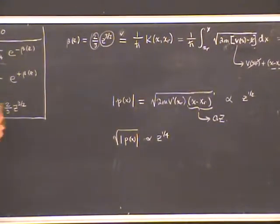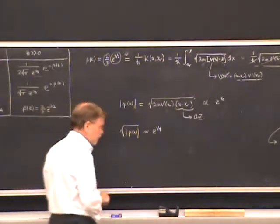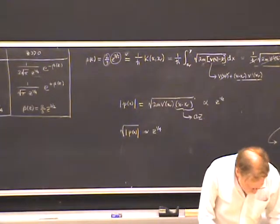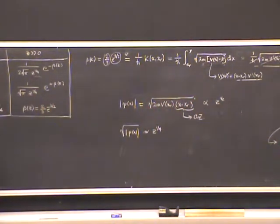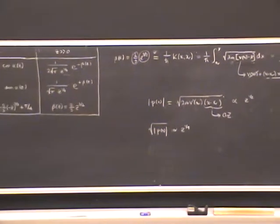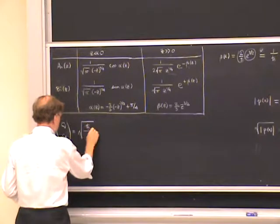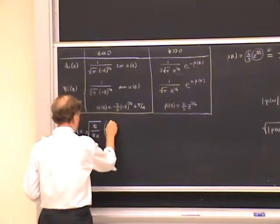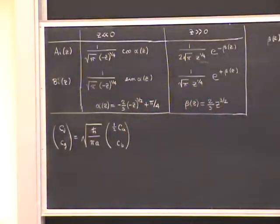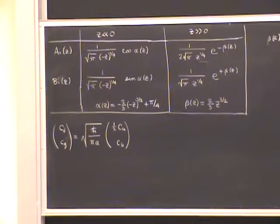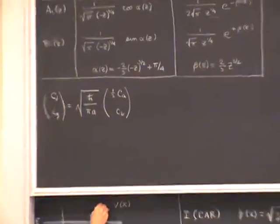The only thing left to match these solutions together is the constants—working out the relation between the coefficients multiplying these solutions. The damping and growing coefficients C-damping and C-growing are equal to the square root of ħ over πa times one-half of C-Bairy and C-Airy respectively. This is just a translation between these two types of coefficients. This final formula connects us from the turning point region over to the classically forbidden region, connecting solution number two here with the Airy and Bairy solution.